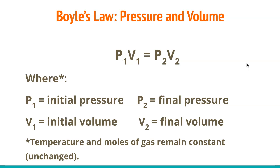The inverse relationship is represented mathematically as P1V1 = P2V2, where P1 is the initial pressure, V1 is the initial volume, P2 is the final pressure, and V2 is the final volume — they must change together to keep a specific ratio. Important note: temperature and moles of gas remain constant for Boyle's Law. When we relate just two variables in the simple gas laws, we hold the other two constant. If all four variables change, we need the ideal gas law.